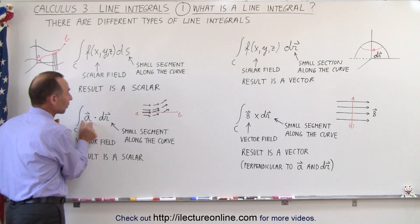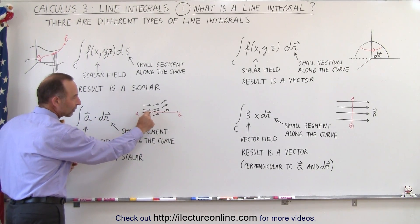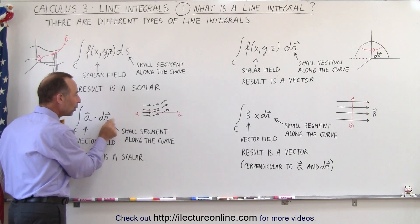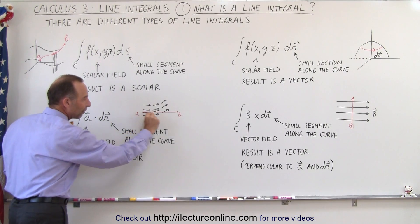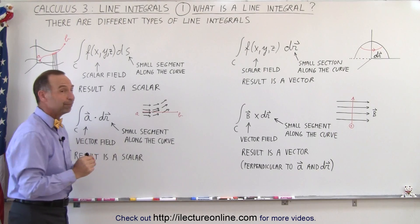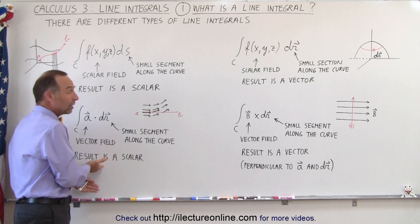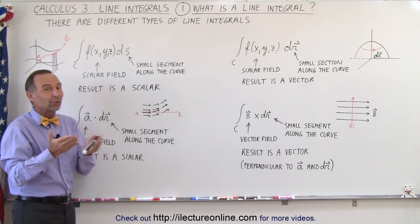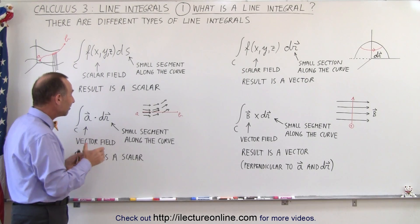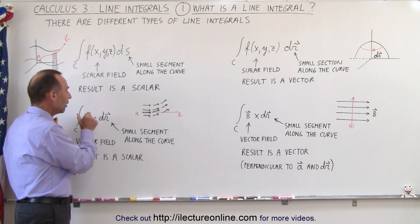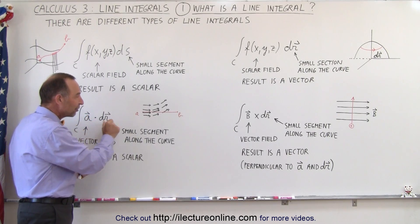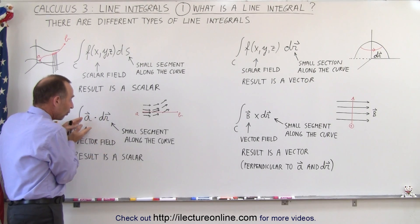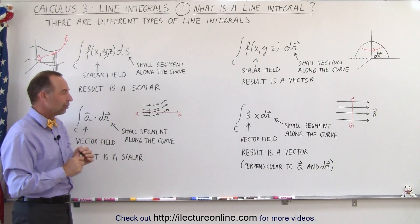So we multiply the vector or the magnitude of the vector field at a particular location along the path of travel and we multiply that via dot product with a small segment of our path and then we add up all those segments together. Now the result of that will be that we end up with a scalar quantity because when we multiply via dot product two vectors together, we get a scalar. For example, let's say we're trying to find the work done by a force that acts on an object that travels on a particular path. So again, the work found would be the dot product between the force and the direction of travel.